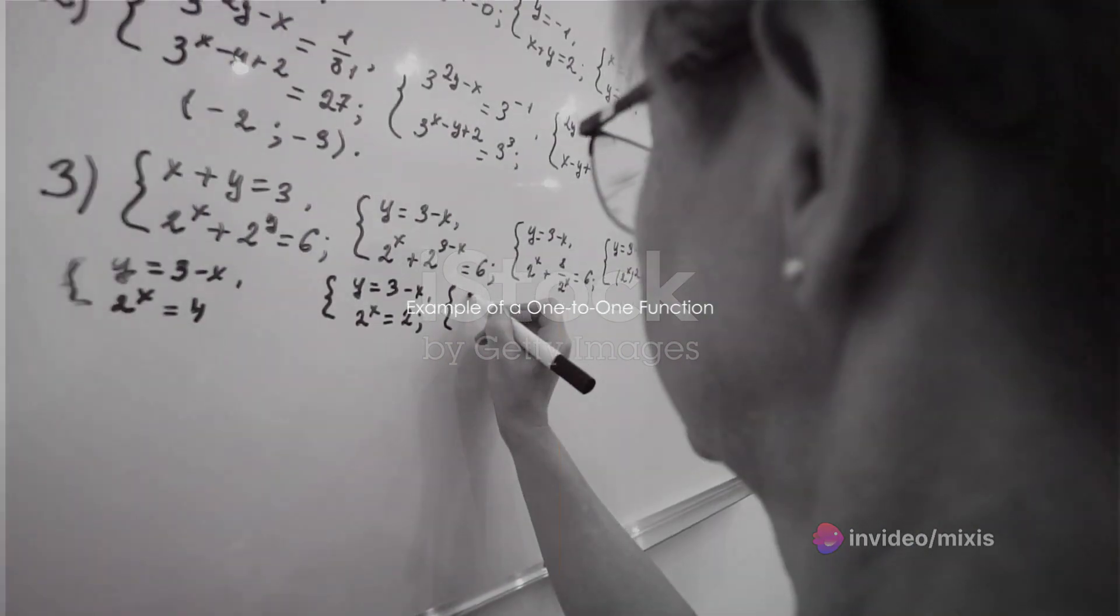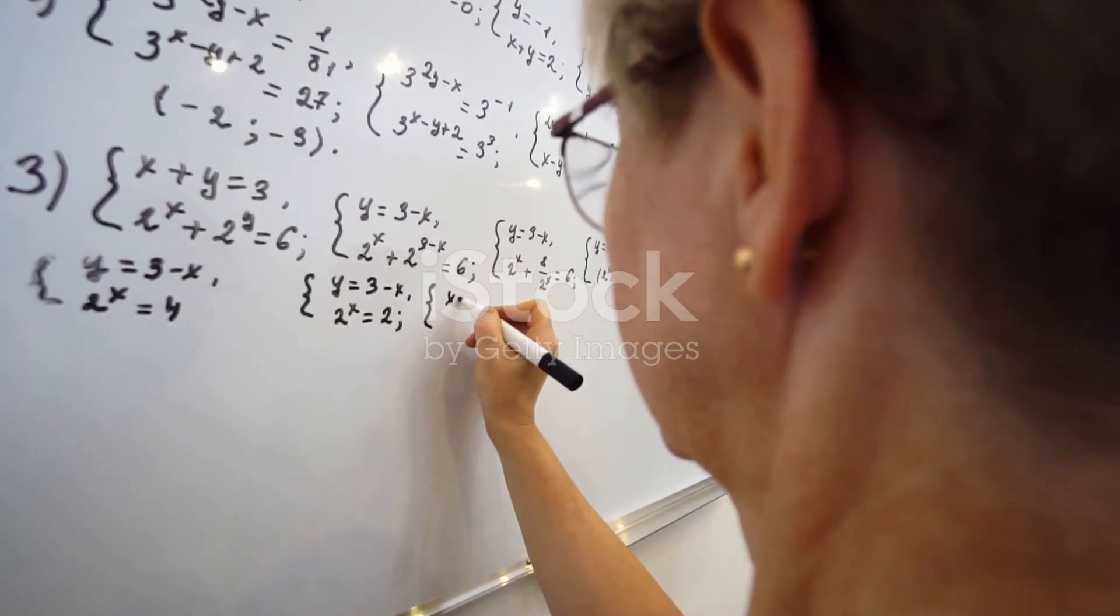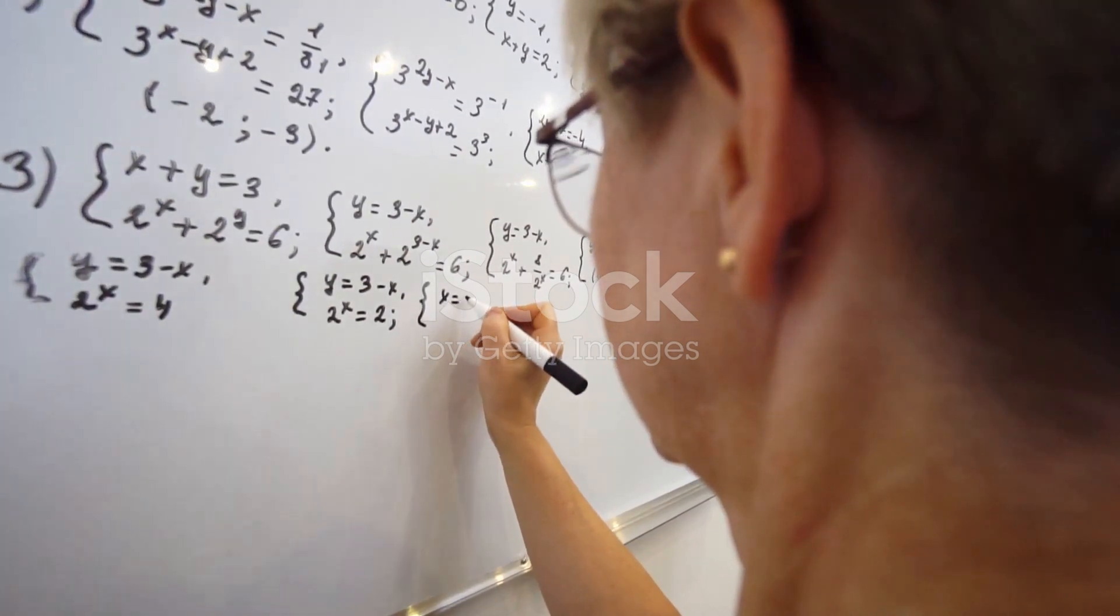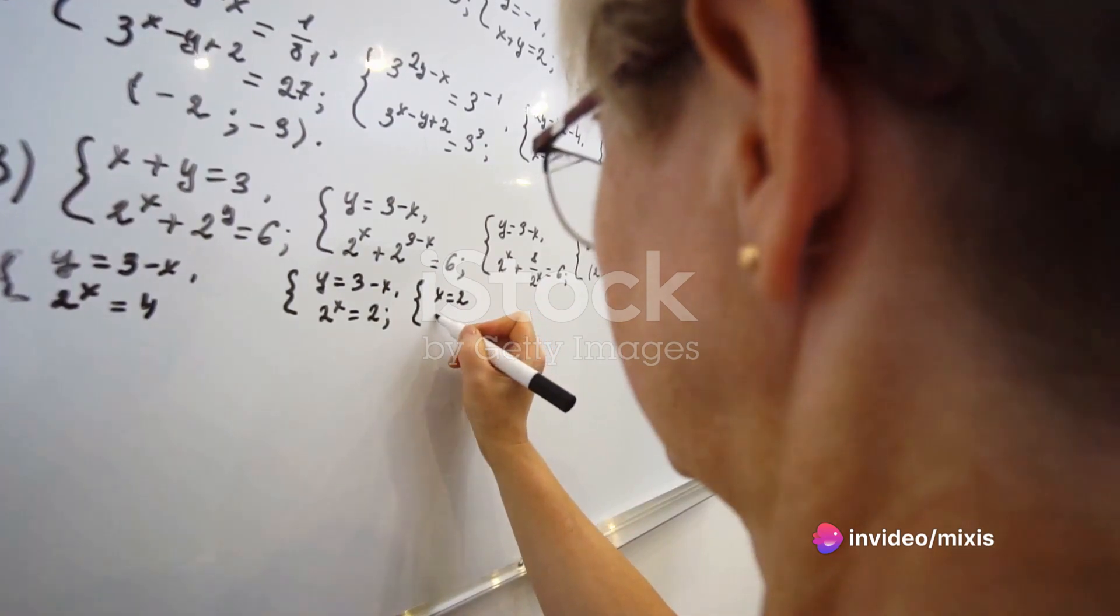Let's illustrate this with an example. Consider the square root function f(x) = √x. This function is one-to-one as for any two distinct inputs x and y, their square roots √x and √y will also be distinct.